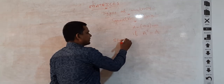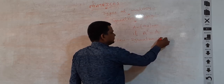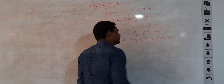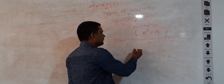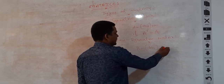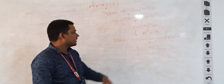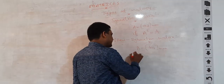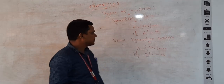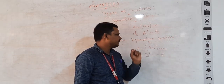Next is the skew symmetric matrix. Let B be a matrix with elements B-i-j of order m by n. We call B a skew symmetric matrix when the matrix satisfies the condition that B-transpose is equal to minus B. When this condition is satisfied, the matrix B is known as a skew symmetric matrix.